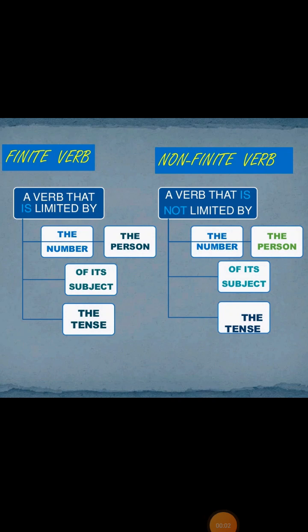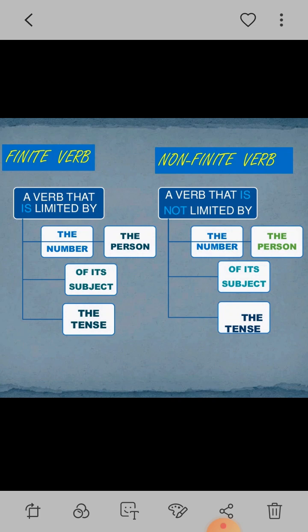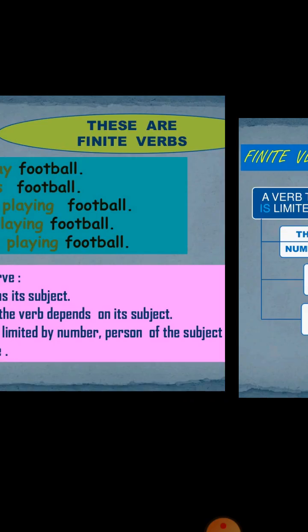Finite and non-finite verbs. A verb that is limited by the number of the person of the subject and the tense is called a finite verb. A verb that is not limited by the number of the person of the subject and the tense is called a non-finite verb. Try to understand with the examples.